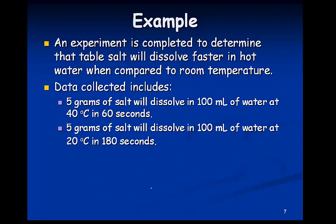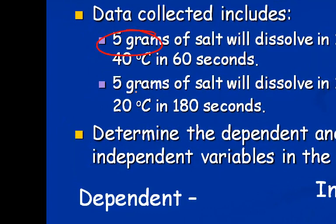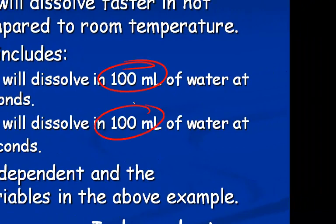If we look at this example, we're looking at how fast it takes table salt to dissolve in hot water versus cold water, room temperature water. So, looking at this data, we can determine the dependent and the independent variables. Well, 5 grams of water and 5 grams of water are the same. These do not change. These are controlled variables. 100 milliliters of water. The volume of water is the same. These are also controlled variables.